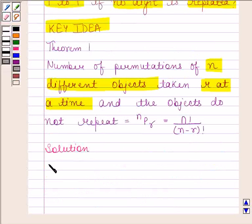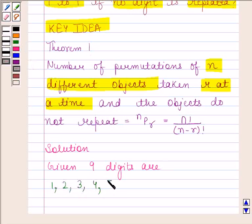Given 9 digits are 1, 2, 3, 4, 5, 6, 7, 8, and 9. We have to find number of three-digit numbers that can be formed by using these digits if no digit is repeated.